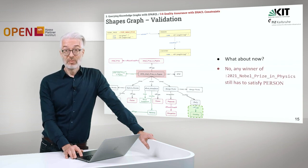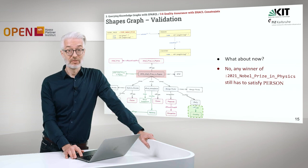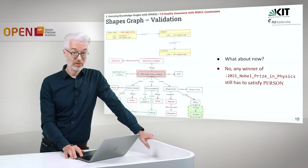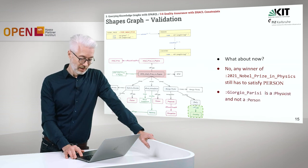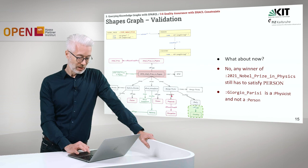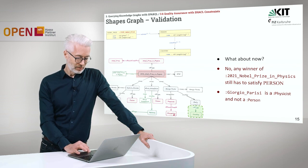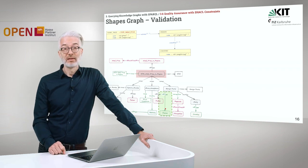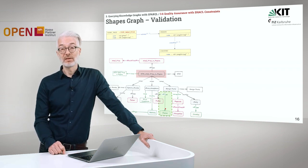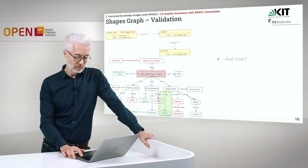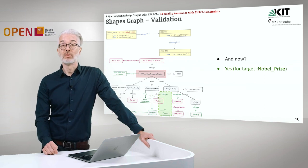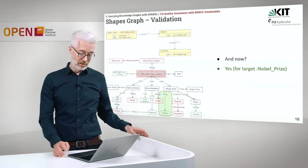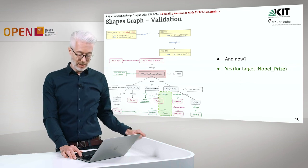Let's try again. Still, any winner of the 2021 Nobel Prize in Physics still has to satisfy the person shape. What is missing now? Giorgio Parisi has his occupation listed as physicist, and as we see, that is a subclass of occupation. What is missing is that the guy is a person. So we simply add here the type person. And then we have a complete graph, because now if we test it for the target Nobel Prize shape, everything defined there is satisfied.